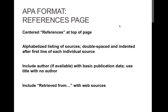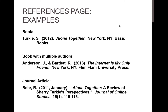For formatting the references page in APA format, include the word 'References' centered at the top of the page. Then develop an alphabetized listing of sources that is double-spaced and indented with hanging indents after the first line of each source. Include the author, if available, with basic publication data. Use the title if you don't have an author. Be sure to include the phrase 'retrieved from' with the use of web sources. Entries here are shown single-spaced for display purposes, but use double-spacing in your actual paper.